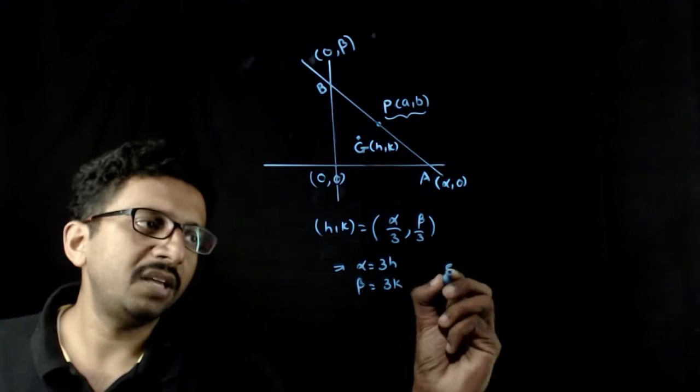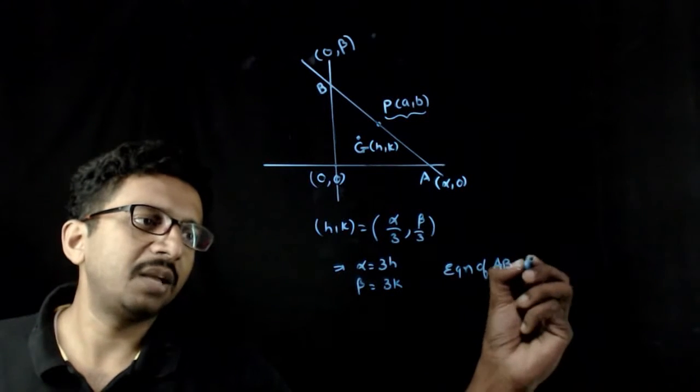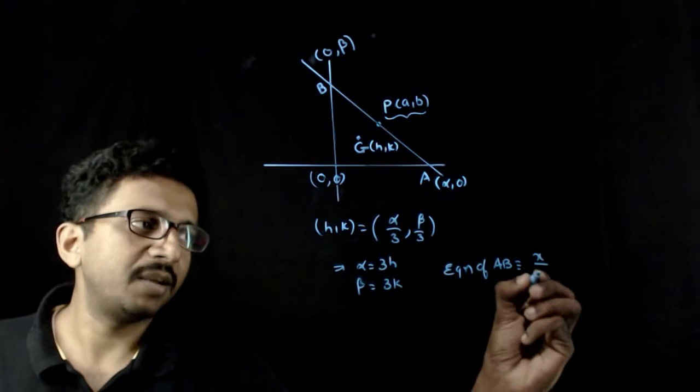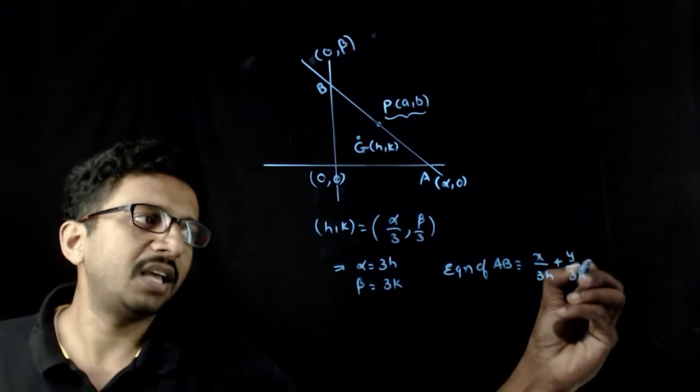Now, what is the equation of AB? The equation of AB is nothing but x by x intercept 3H plus y by y intercept 3K is equal to 1.